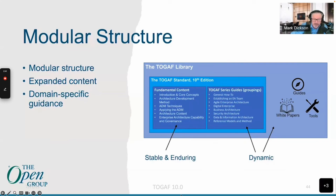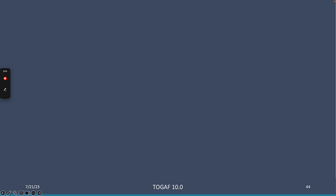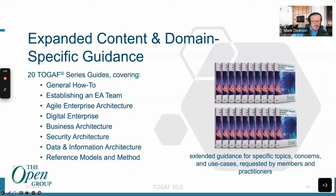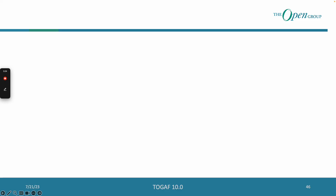In terms of modular structure, the fundamental content is stable and enduring — that stays the same. The focus is on expanding content: more white papers and guidelines. For example, there are specific guidelines on agile enterprise architecture, business architecture, security architecture, data and information architecture, reference models, methods, and how to establish an EA team. This represents more expanded and domain-specific content.